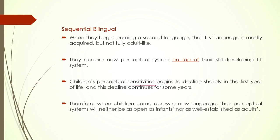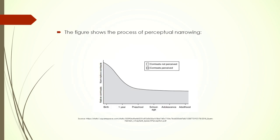Children's perceptual sensitivities begin to decline sharply in the first year of life and this decline continues. When children come across a new language, their perceptual system will be neither as open as an infant's nor as well established as an adult's. Infants have a rather open perceptual window; adults have an already well-established perceptual window. Sequential bilingual children, however, are somewhere in between. This is what perceptual narrowing refers to — in adulthood, the ability to perceive contrast significantly decreases.